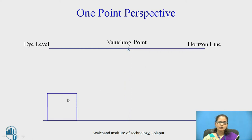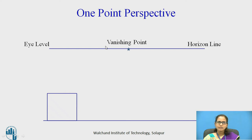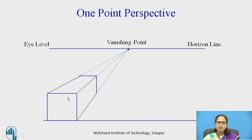Take an object such as a cube or a box. This is the front view, drawn on the ground level. This is the horizontal line, and on the horizontal line, the vanishing point will be placed — this is the eye level of the object. The box has four corners, and all these corners have to be joined to the vanishing point.